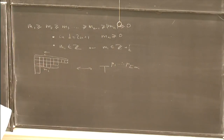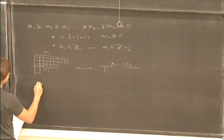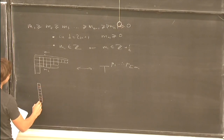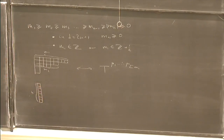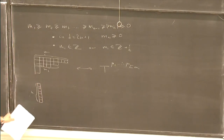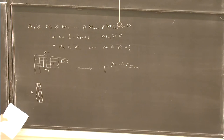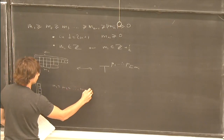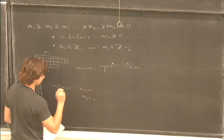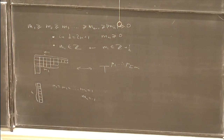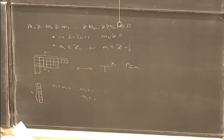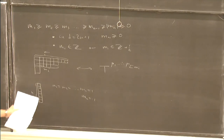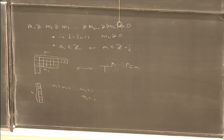M_i corresponds to Young diagrams. One subtle thing is that if you consider a diagram with N rows and each row has only one box, in even dimensions there are two of those, because this corresponds to M_1 = M_2 = ... = M_N = 1. But in even dimensions you can also set M_N = -1. The sign of M_N simply determines the self-duality or anti-self-duality condition. For example, in 4D, N is two, so you have a two-form, and two-forms in four dimensions can be self-dual or anti-self-dual, and this is determined by the sign of M_N.